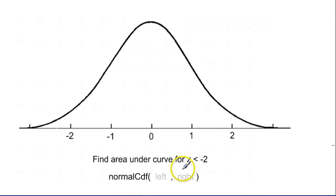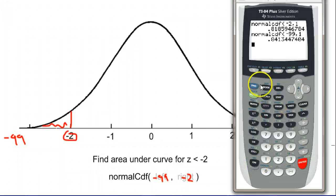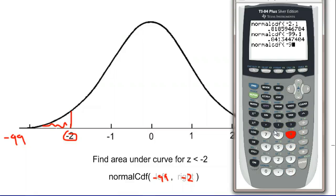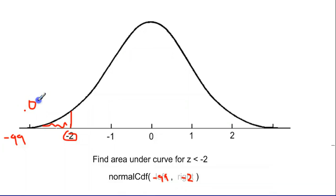Another example here says find the area under the curve for z is less than negative 2. Same approach. Z is negative 2 and downwards. So we go from our left side of negative infinity, which I'm going to call negative 99 because that's far enough towards negative infinity, and then stop at negative 2. So normalCDF, negative 99, negative 2. So they can both be negative and that's okay. One does not need to be positive. Second vars, normalCDF, negative 99, comma negative 2. And we get 0.023.